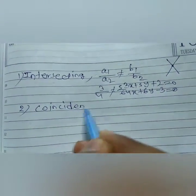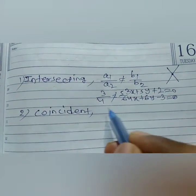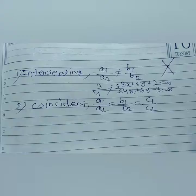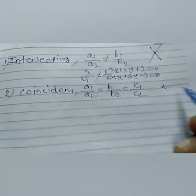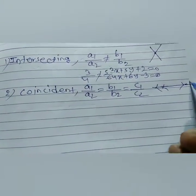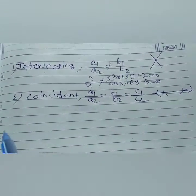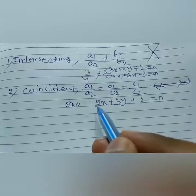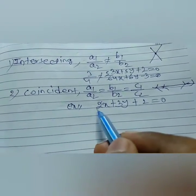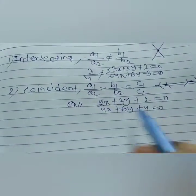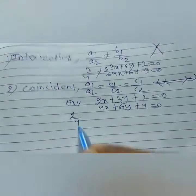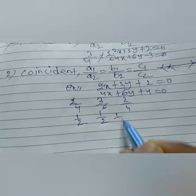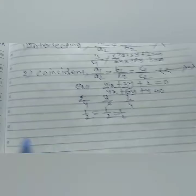The second condition is coincident — one line lies on another line. The condition is: a1 by a2 equals b1 by b2 equals c1 by c2. Example: 2x plus 3y plus 2 equals 0. If we multiply by 2, we get 4x plus 6y plus 4 equals 0. Checking: a1 by a2 is 2 by 4 equals 1 by 2, b1 by b2 is 3 by 6 equals 1 by 2, and c1 by c2 is 2 by 4 equals 1 by 2. All three are equal, so this is the coincident condition.